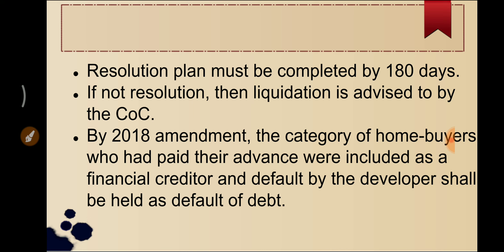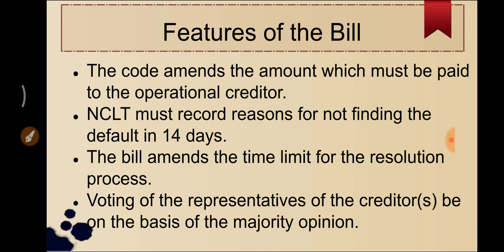So in summary, the complaint first goes to NCLT, then NCLT appoints the COC. The COC decides: if restructuring is needed, a resolution plan is made; if resolution does not happen, liquidation is advised by the COC and ordered by NCLT. The creditor also has the option to directly apply for liquidation to settle the credit. Now let's look at what changes the 2019 bill brings.